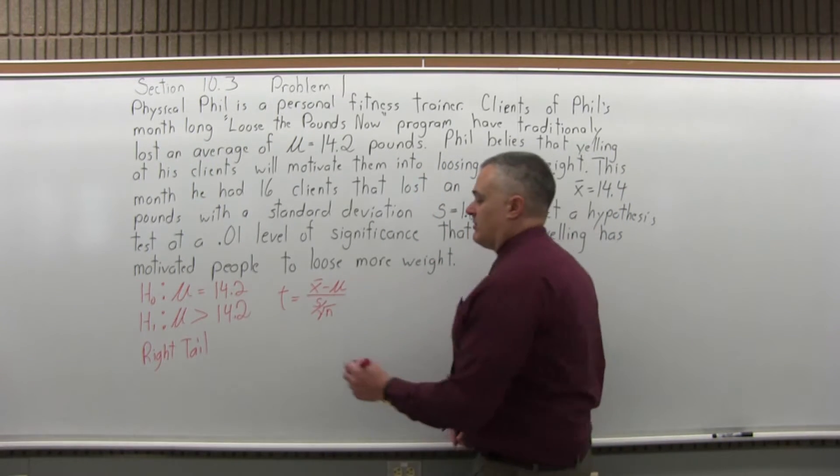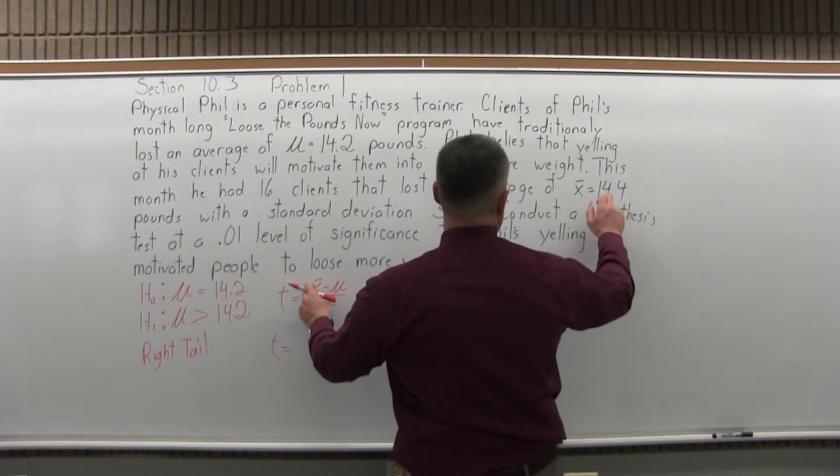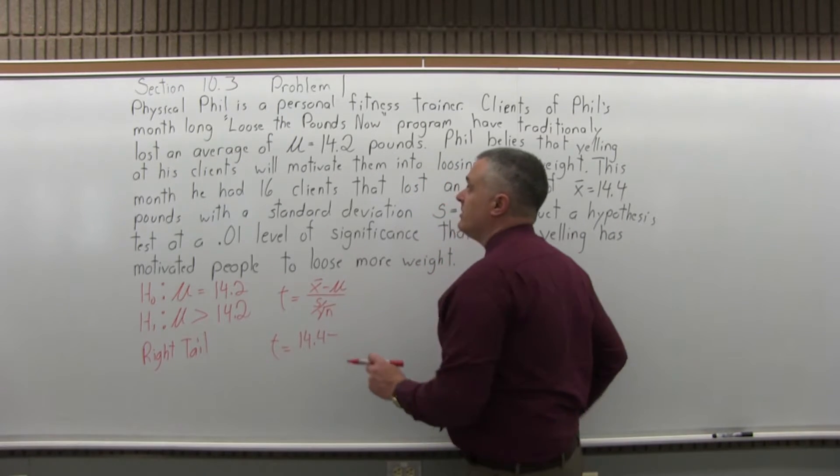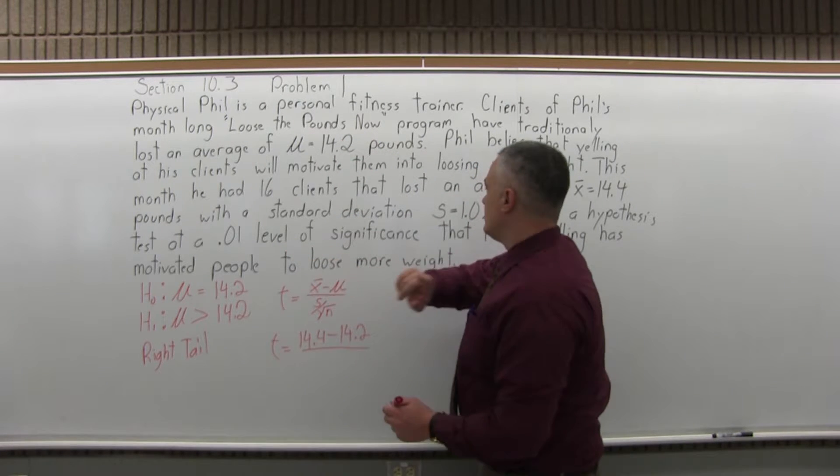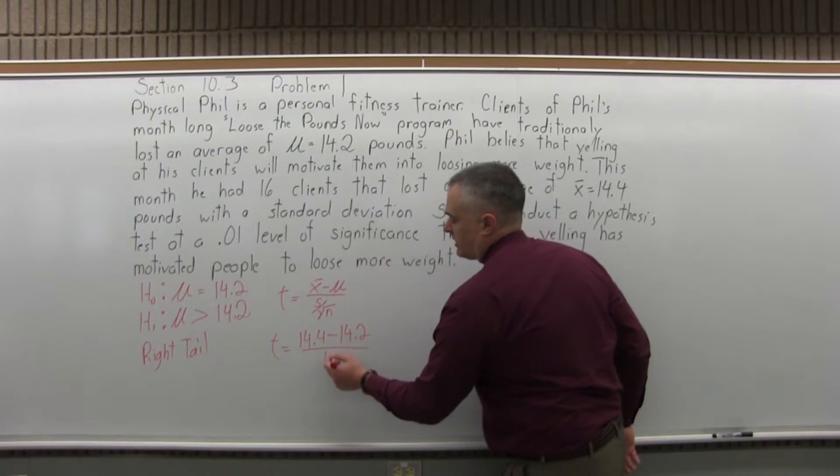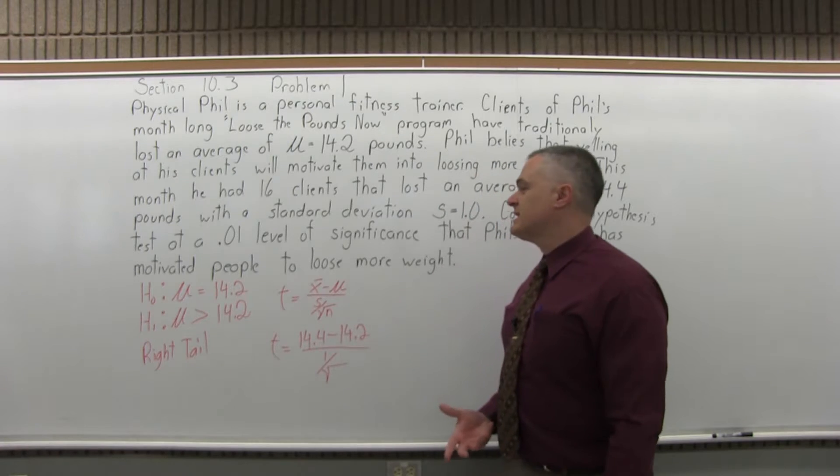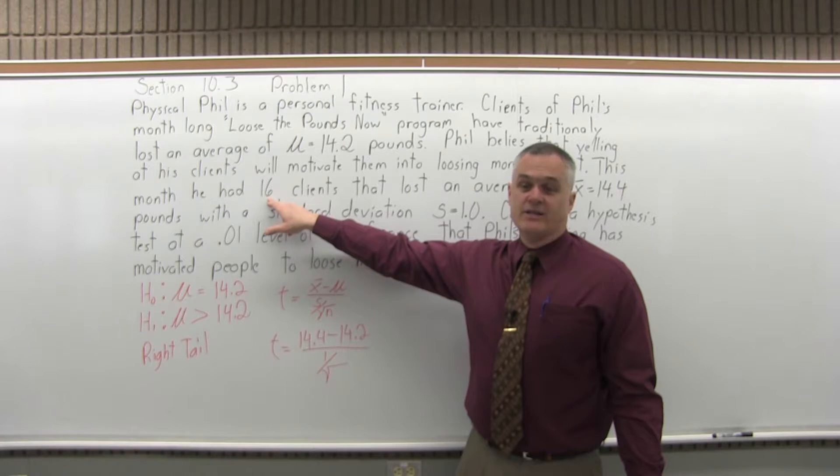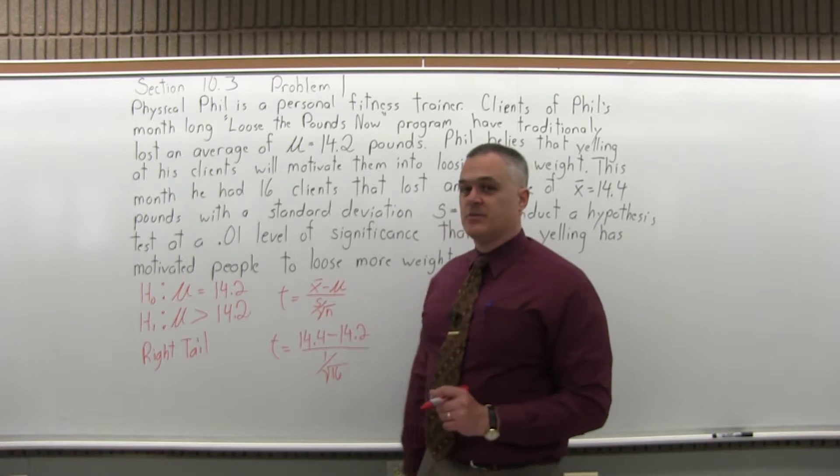For this particular problem, T is X bar was 14.4 pounds minus mu, which is 14.2 pounds, over S, the standard deviation, which was 1.0, divided by square root of N. N is the size of the sample. How many items were in the sample? For this problem, our sample contains 16 clients that are trying to lose some weight. So square root of N becomes square root of 16. Don't forget the square root. It's a common mistake.